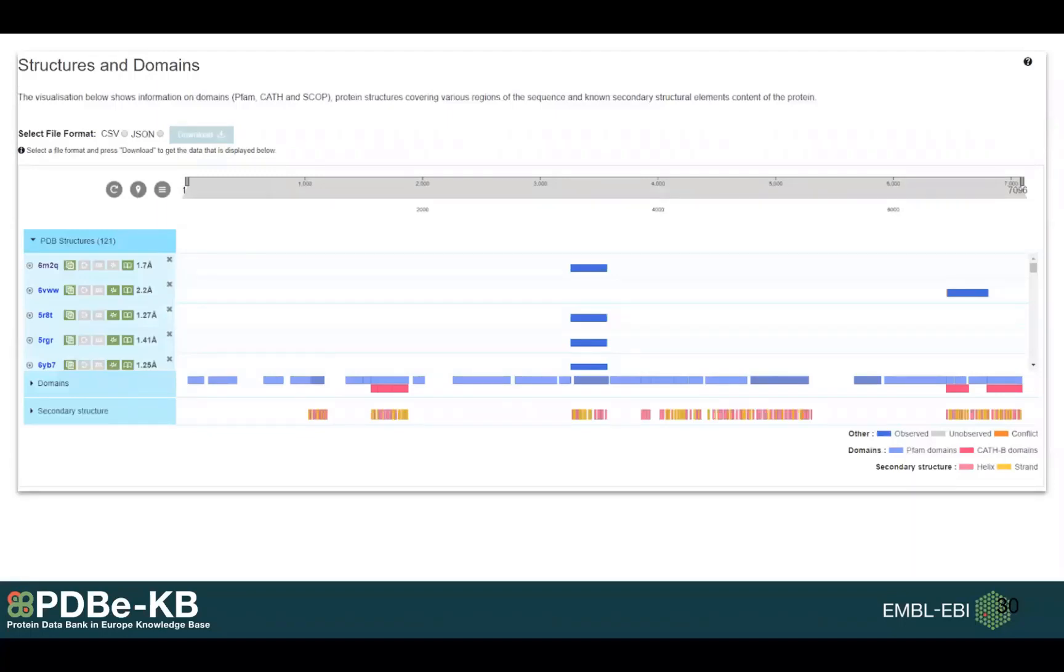Right beneath this section we have Structures and Domains. Here you get an overview of all the PDBs that are covering the different regions of the protein sequence, and you can compare that information with domain mappings and secondary structure information.